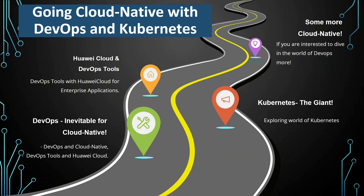Let me take you through the journey of cloud native. These are some milestones we will cover: first DevOps, then Kubernetes — a great tool for the world of microservices and containerization — then shifting toward Huawei Cloud and some enterprise solutions. We'll also discuss some DevOps tools of Huawei in today's session. In the third part we'll focus more on the application layer, and these three milestones should be covered within this year.